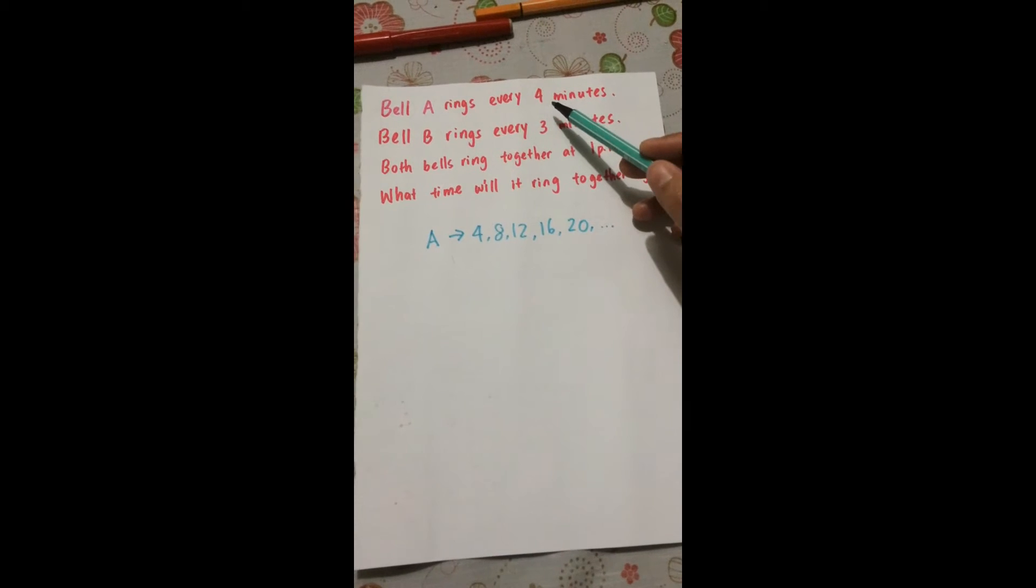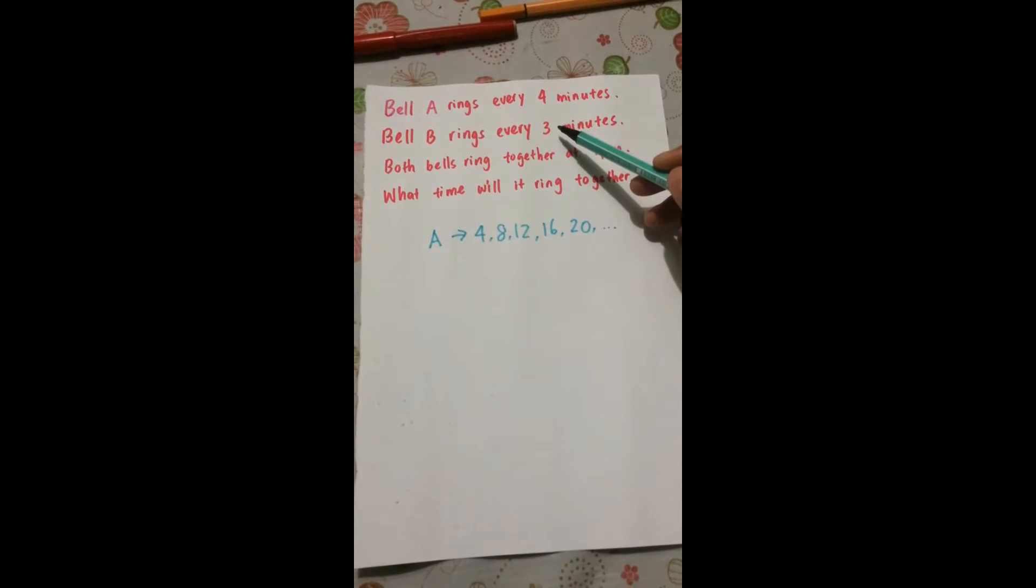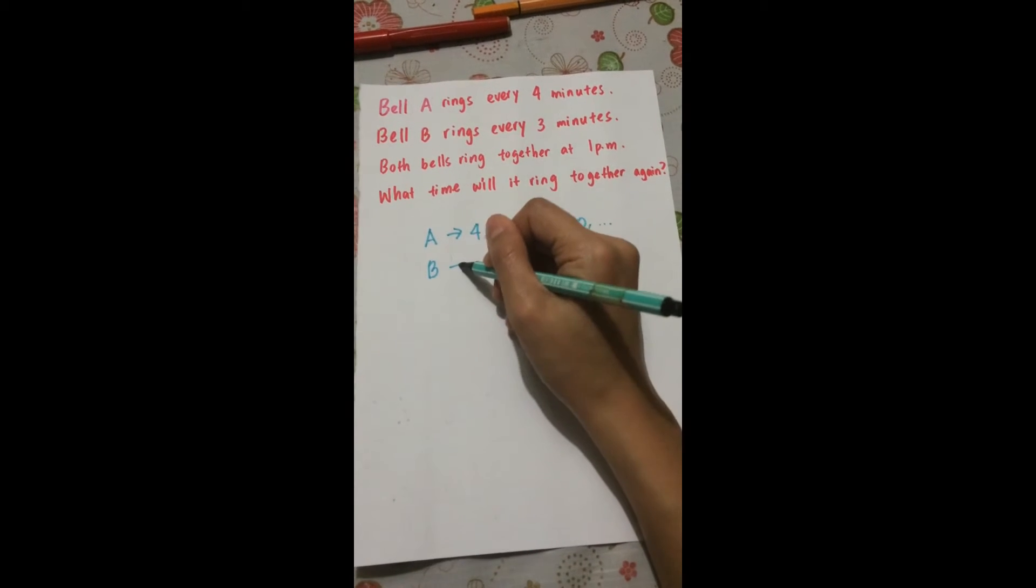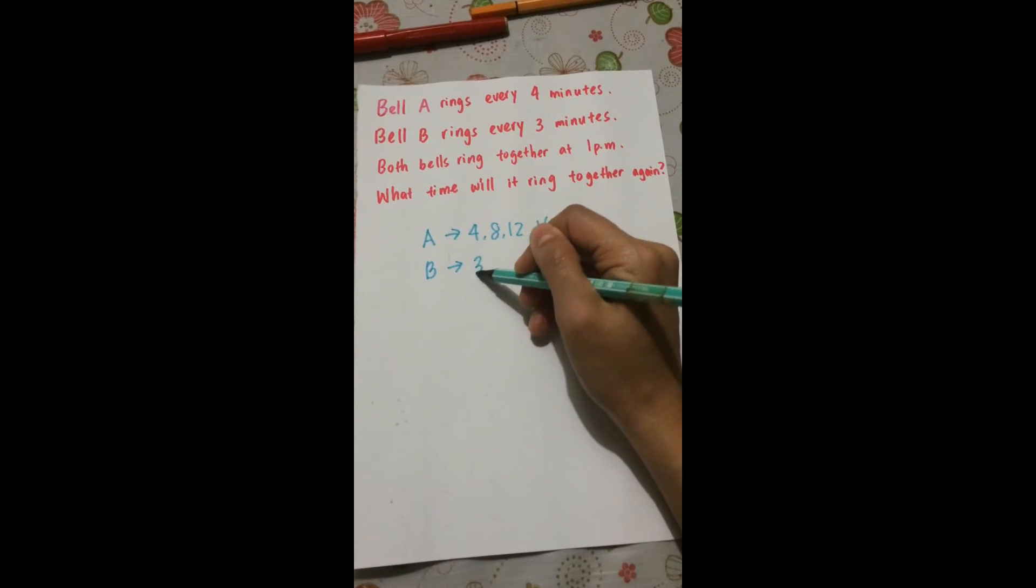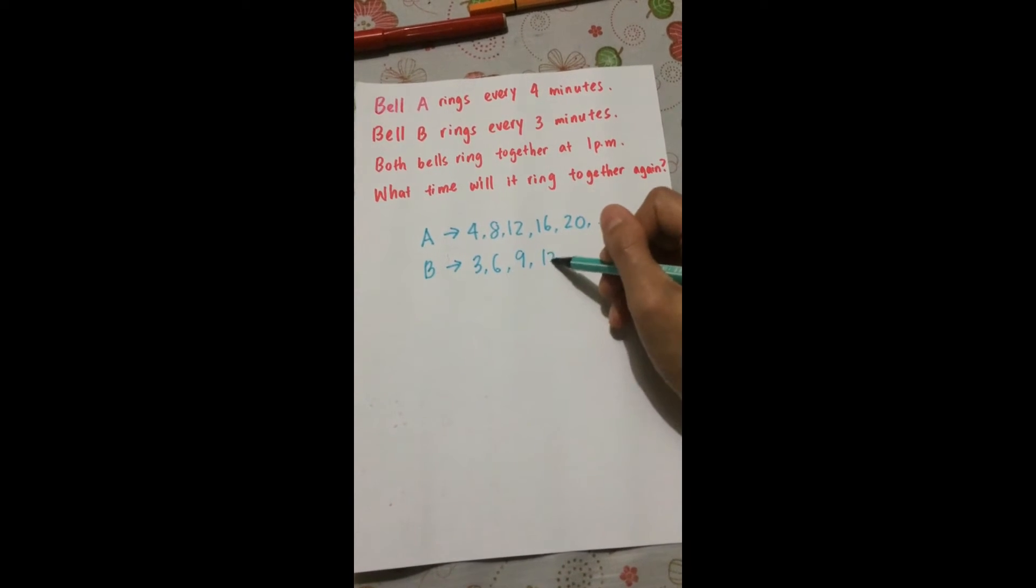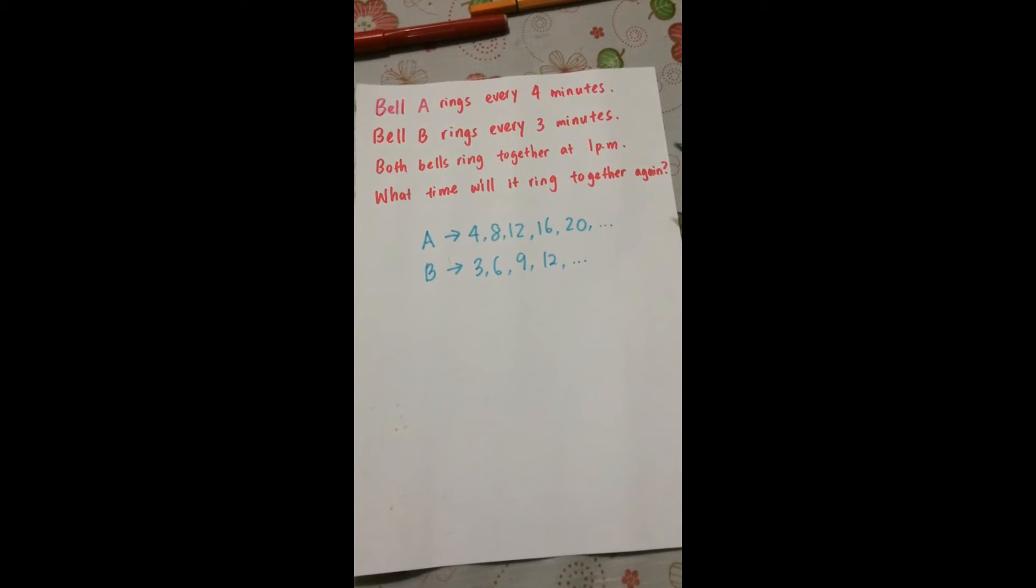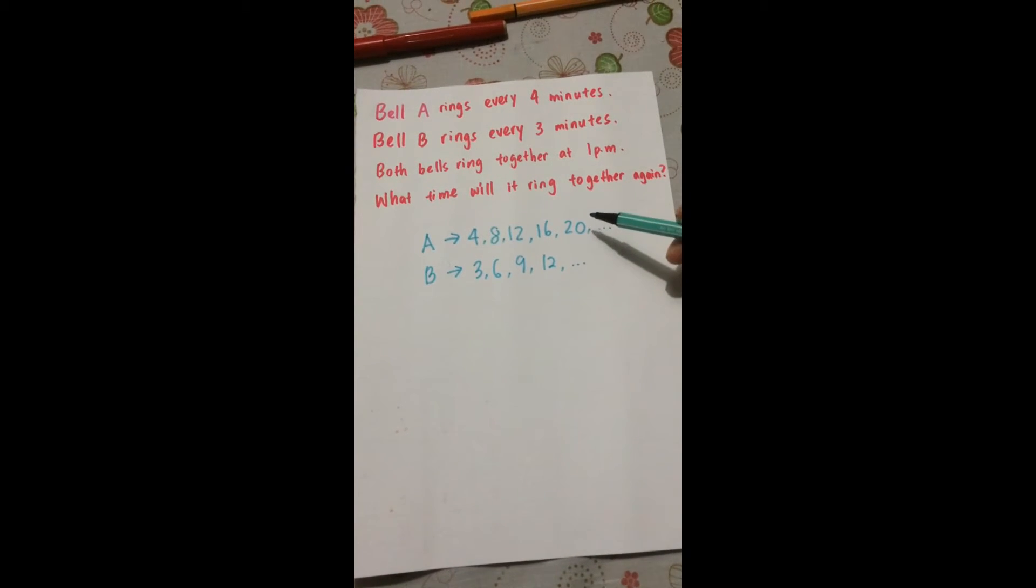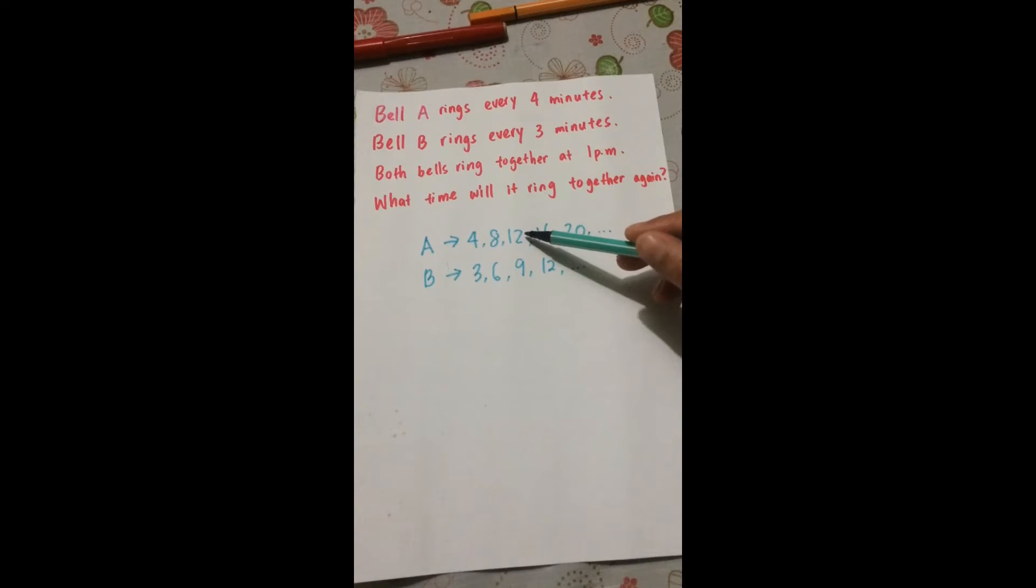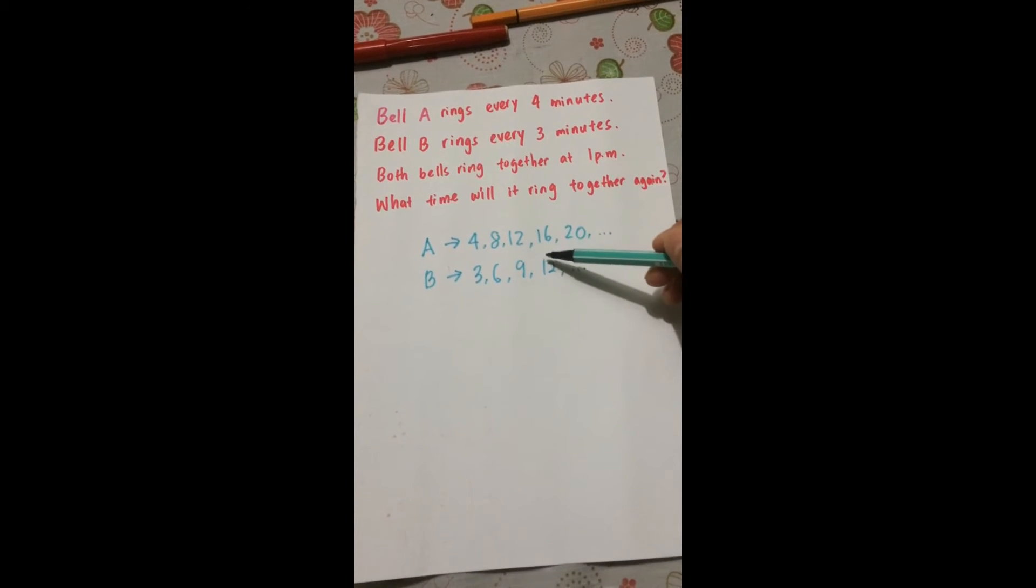After listing the multiples of 4, let's list the multiples of 3. Now that you have listed the multiples of 4 and 3, you realize that they have a common multiple of 12.